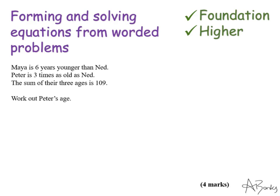Now more often than not in the example it's the first name that they mention. So in this one it could be Maya. But if we look we've got Maya is six years younger than Ned and Peter is three times as old as Ned. So actually using Ned as our common value would be much easier.